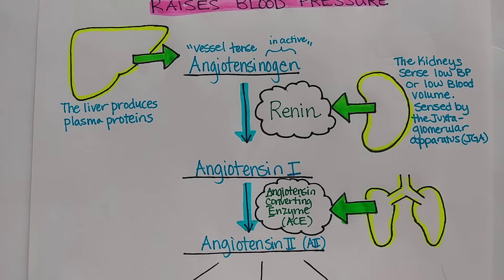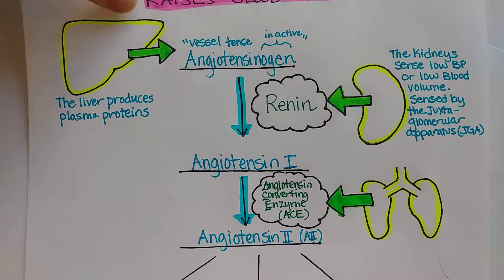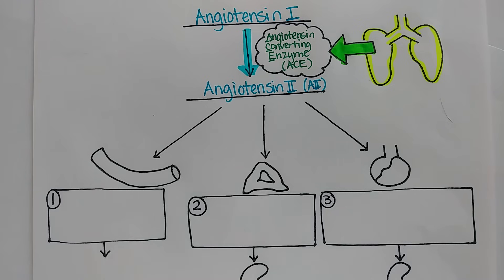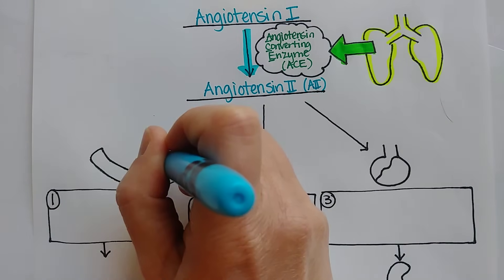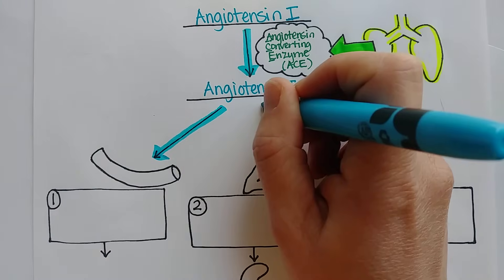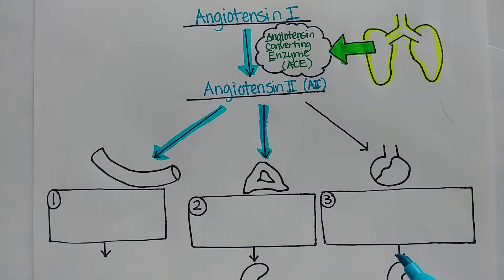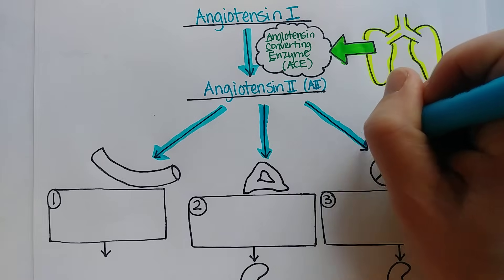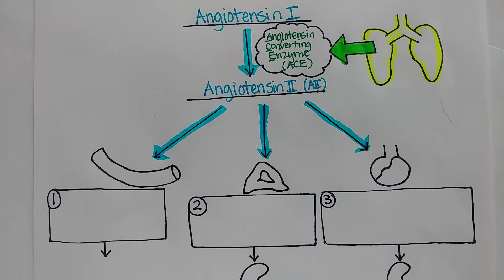Angiotensin 2 is going to raise blood pressure, and it's going to do it in three ways. The first is it's going to constrict blood vessels. The second is that it's going to make a hormone called aldosterone come out of the adrenal cortex. And the third is that it's going to make a hormone called antidiuretic hormone come out of the pituitary gland.